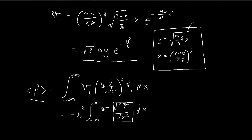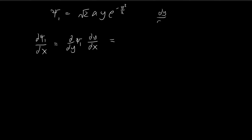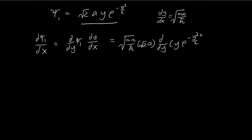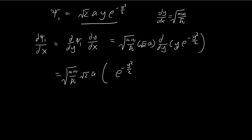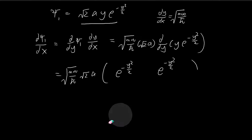Just to remind ourselves, y is related to x by this formula, so dy/dx is actually a constant. It becomes this constant times the y-derivative of this term. We take d/dy of y times e to the power of negative y-squared over 2. Using the product rule: differentiating the first term y gives 1, so we get e to the power of negative y-squared over 2. Then we retain y and differentiate the exponential using the chain rule, giving negative y. This negative y combines with the y term to become negative y-squared. So this is the first derivative.